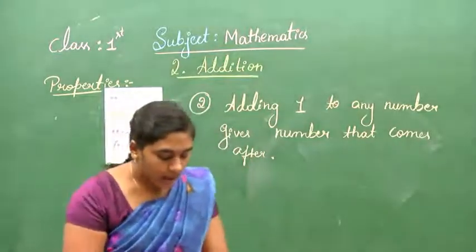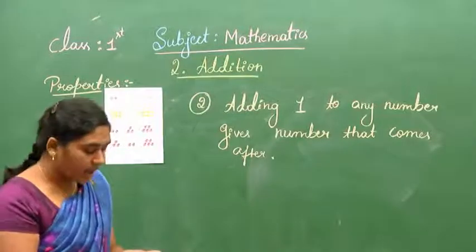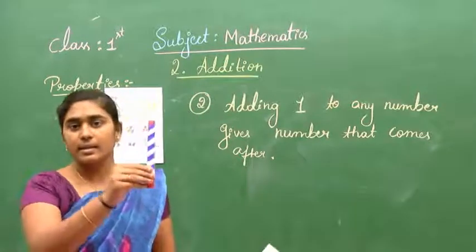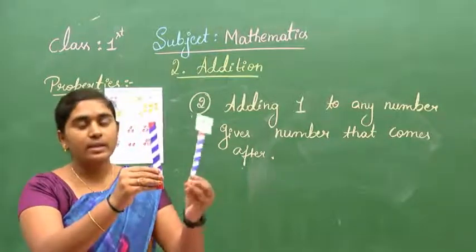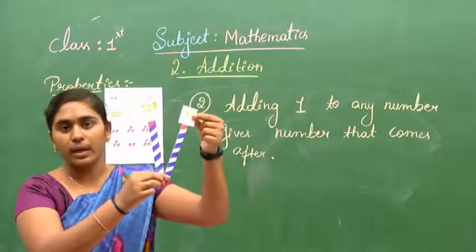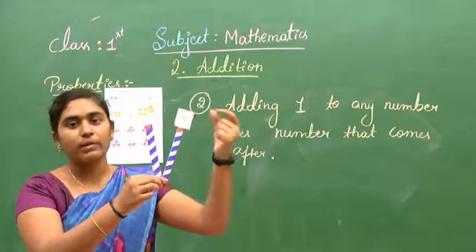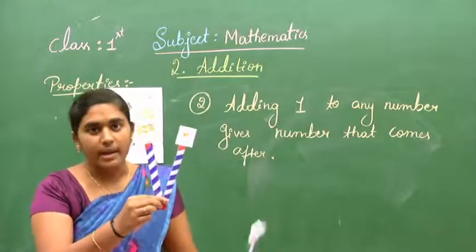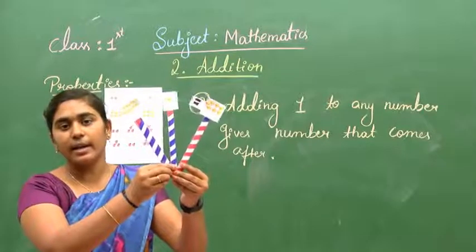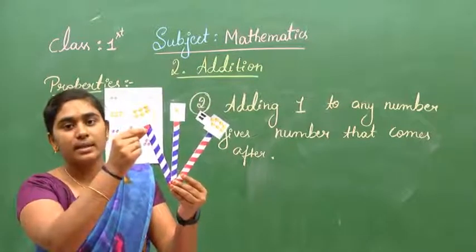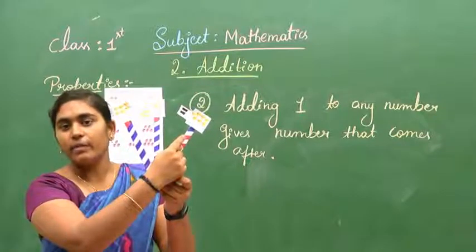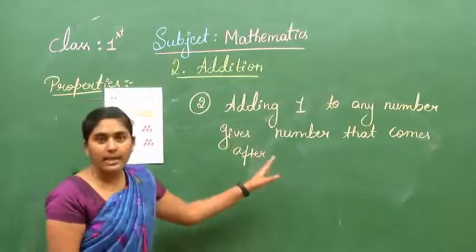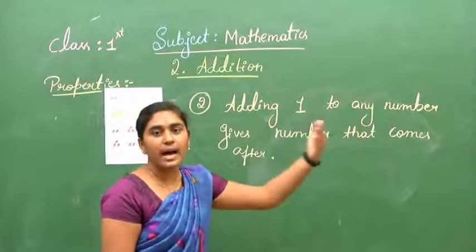For example, you can see here. How many ducks are there? There are 6 ducks. For these 6 ducks, I am going to add 1 more duck. So what do we get for 6 plus 1? It is 7. 6 plus 1 is 7. What comes after number 6? It is 7. After number 6 is 7. So the second property says, if 1 is added to any number, we get the number that comes after — the next number.